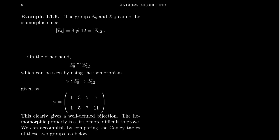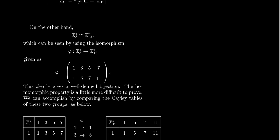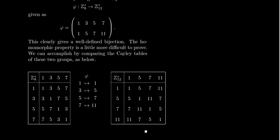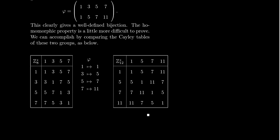Is this bijection homomorphic? That's harder to verify. When there's no clean formula — just an element-by-element assignment — proving homomorphism is more challenging. For a very large group this would be extremely difficult. Since these are both groups of order four, it's manageable. To prove that this function φ is homomorphic, I want you to compare the Cayley tables of the two groups.